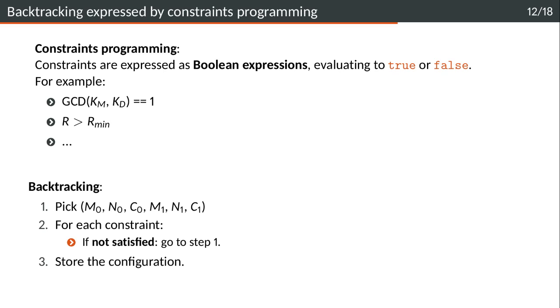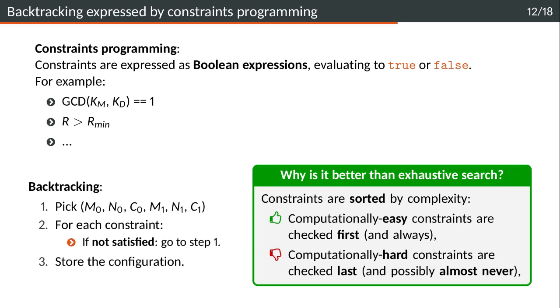Right now you can think, why is that better than exhaustive search? Well, it's better because constraints are sorted by complexity. Computationally easy constraints are checked first and always, but they are fast to check. And computationally hard constraints are checked last. Possibly they are almost never checked because the first constraints might not be satisfied. By sorting the constraints, we are actually able to get a very computationally efficient algorithm, which is also very easy to implement and to use.